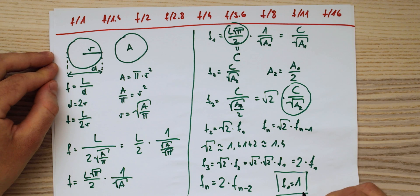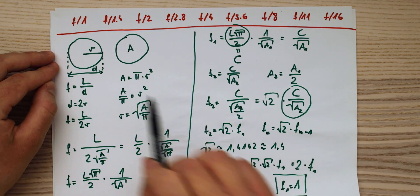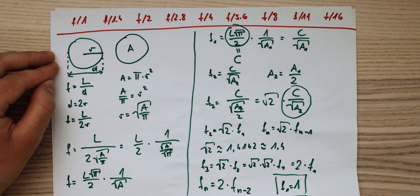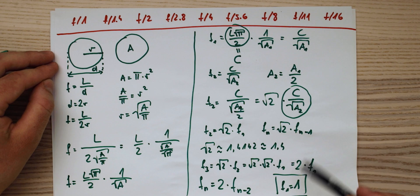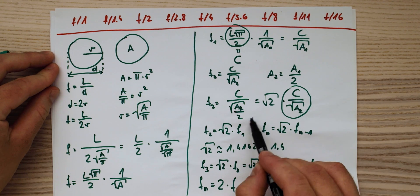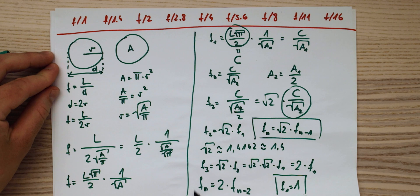Why does f1 equal 1? That's somewhat an arbitrary choice, but in a geometric sequence it doesn't make sense to start with 0 because you'd have 0 everywhere, so 1 is the most intuitive and simplest starting point. The f-stop sequence is definitely a geometric sequence. Starting from f1=1, f2 equals square root of 2 times 1, which is roughly 1.4, and from there you can generate the entire sequence: f1, f1.4, f2, f2.8, and so on.